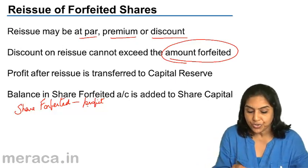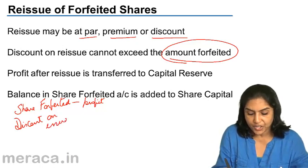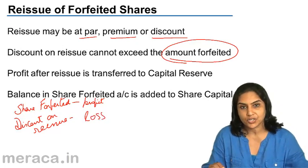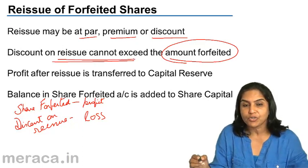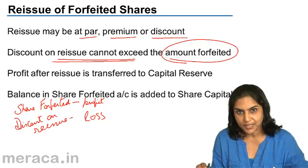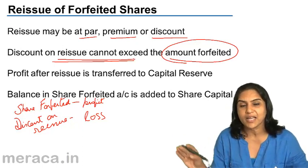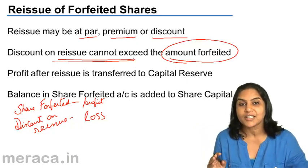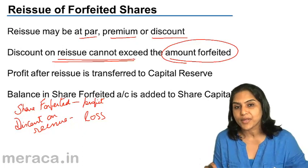When shares are reissued at a discount, the discount on reissue is a capital loss. That is why there is a restriction: the discount on reissue cannot exceed the amount which was forfeited. For example, if we collected 3 rupees per share from the previous shareholder, the discount cannot be more than 3 rupees when the share is reissued.